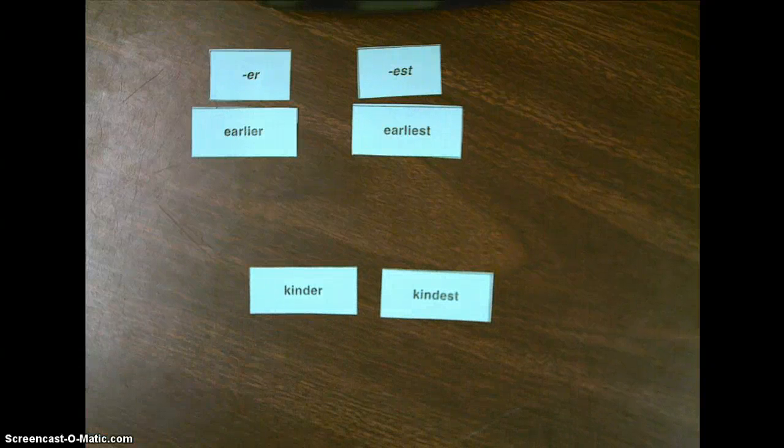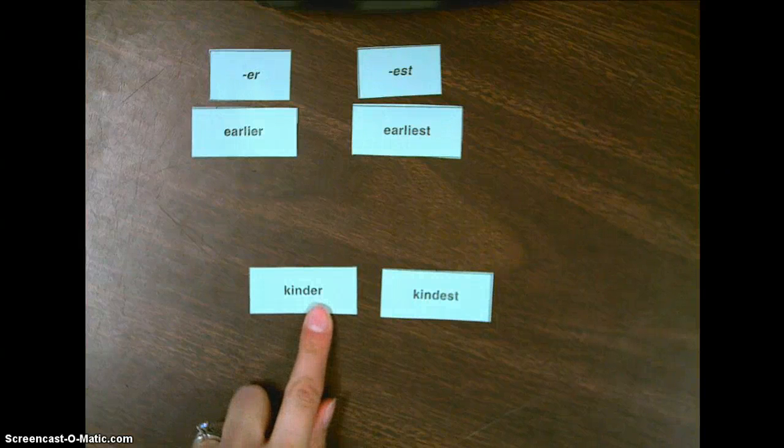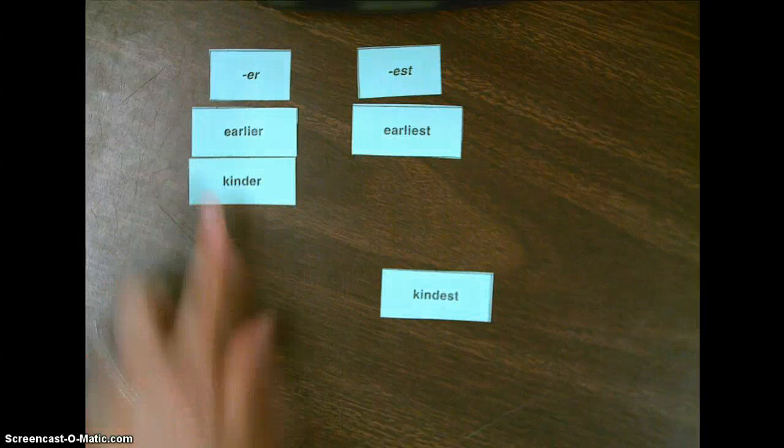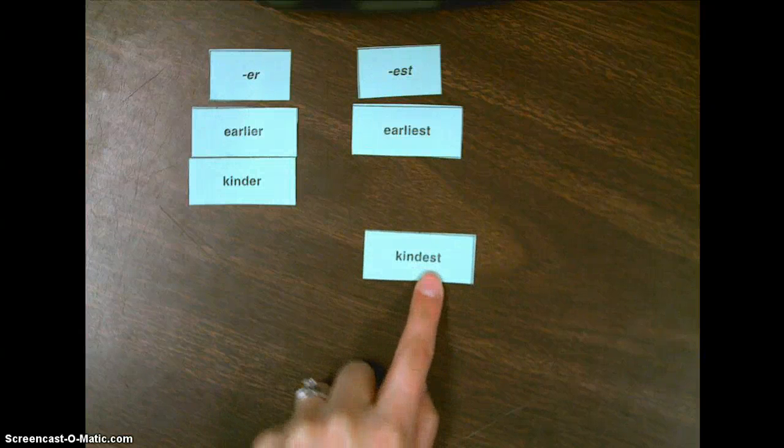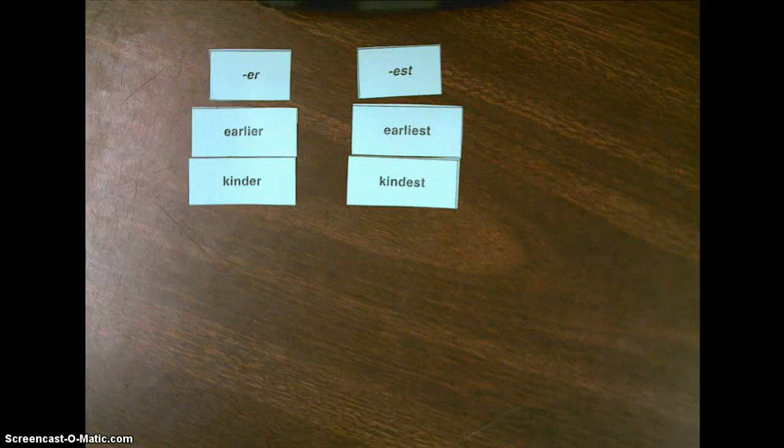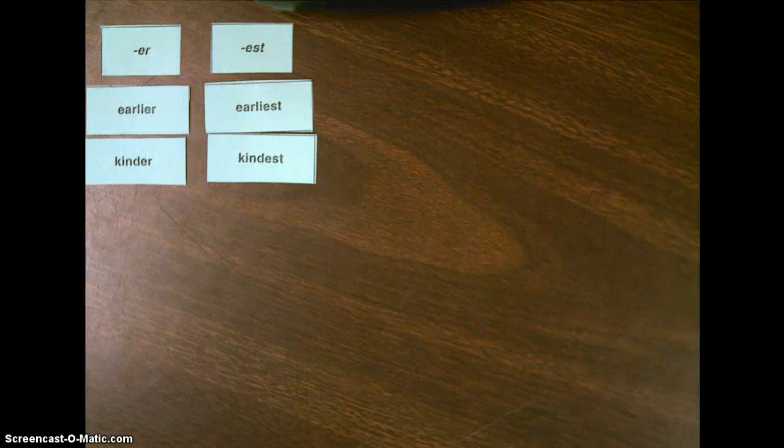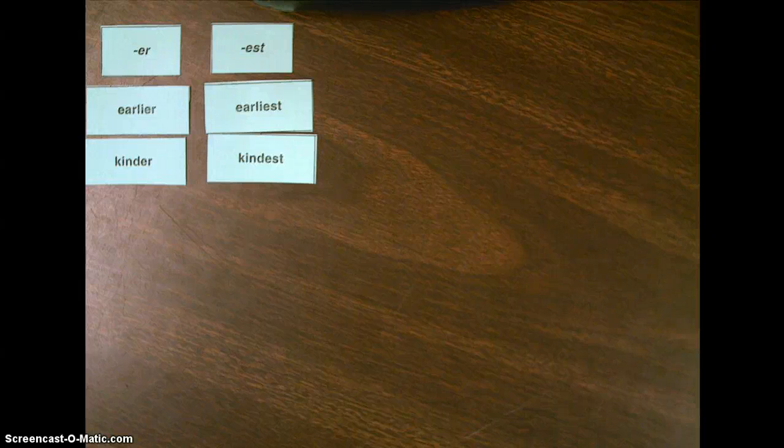Let's take a look at two more words, kinder and kindest. Kinder has an er at the end, and so that's going to go in the er category. And then, kindest has an est at the end, so that's going to go in the est category. I'd like you to go ahead and pause this screencast and sort all of your words into two columns, er or est. And when you do that, I'd like you to put the words that have the same base word together. So earlier and earliest are going to be next to each other. Kinder and kindest will be next to each other. Go ahead and pause.